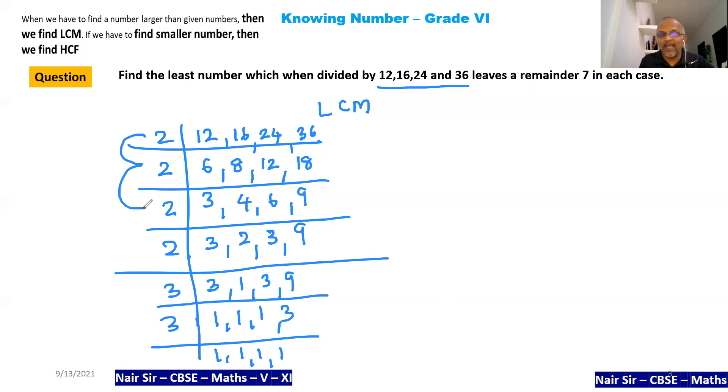16 times 3 is 48. 48 times 3 is... 8 times 3 is 24, carry 2. 4 times 3 is 12, 12 plus 2 is 14. So 144. The LCM that I'm getting is 144.